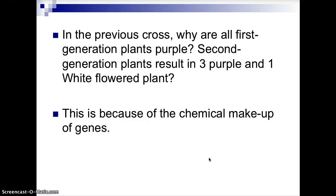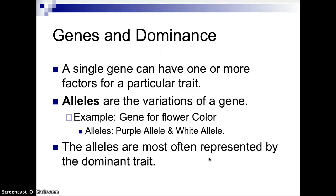This is because of the chemical makeup of the genes. So in order to understand genetics, we need to understand some basic terminology. Genes and dominance: a gene is a region of DNA that codes for a particular trait. A single gene can have one or more factors for that particular trait, and when we talk about those factors, we call those alleles. Alleles are variations of a gene. For example, for the gene for flower color, one allele could represent purple flower color, and another allele would represent white flower color.